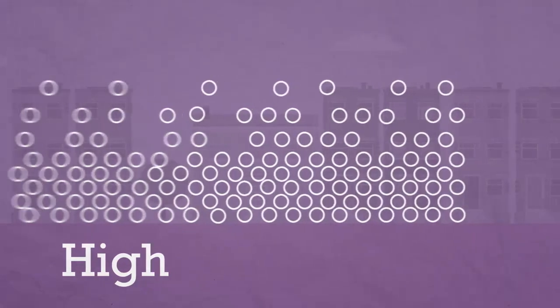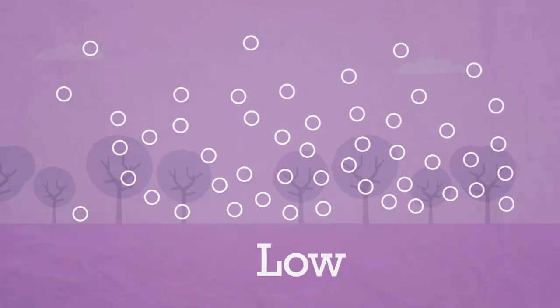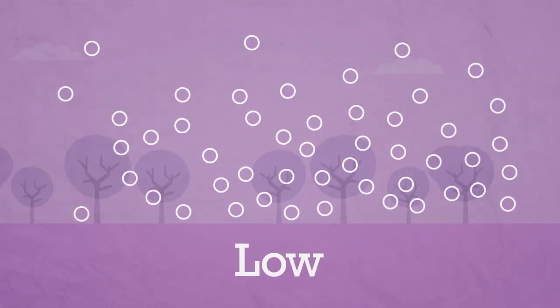Air moves from being squashed under areas of high pressure to areas of low pressure where it is less squashed. This movement of air from high to low pressure creates wind.